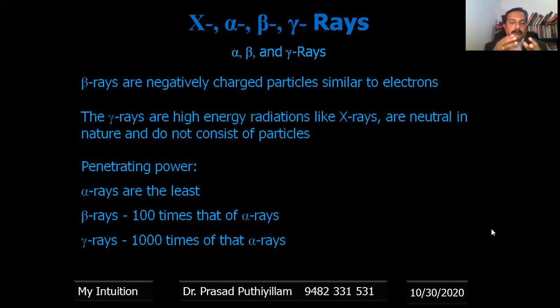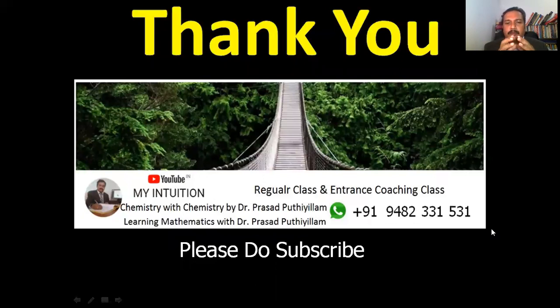The penetrating power: if you consider the alpha rays, they are the least when penetrating a surface or a body, whereas the beta rays have 100 times penetrating power than that of alpha rays and gamma rays have thousand times penetrating power than that of alpha rays. Thank you very much for watching my video. More videos are coming in my YouTube channel. Please do subscribe my YouTube channel and support me. Once again thank you very much and have a nice day.